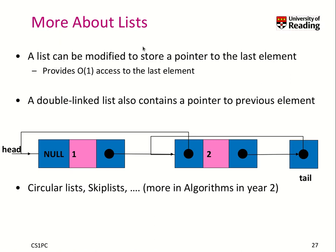A list can be modified to store a pointer to the last element. Here we have a doubly linked list where we store pointers to the previous element as well. This allows us to start from the tail of the list and go backwards — we can go from the tail to the previous element very easily.